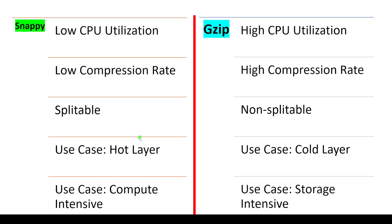A hot layer means you are compressing data that will be accessed frequently by your application — you are going to access it multiple times again and again. In that case we should go with Snappy, because each access will consume less CPU, meaning the rest of the other processes running on the same server will still get resources for their computation. If you go with GZIP in a hot layer, the GZIP compression itself will occupy more CPU and memory resources, and other processes will be affected. So for a hot layer, it is better to go with Snappy.